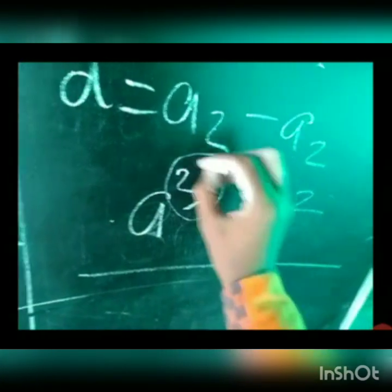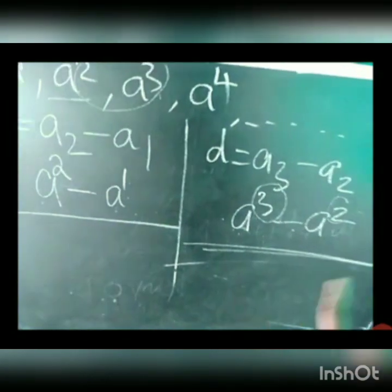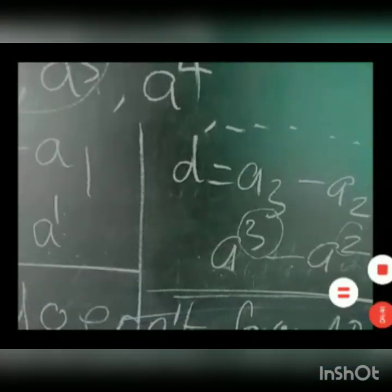Now check the second common difference: d equals a3 minus a2, which is a³ minus a². Again, the variable is the same but the powers are different (3 vs 2), so we cannot simplify and we stop. We get d = a³ minus a². Since the two common differences a² minus a and a³ minus a² are not the same, the sequence does not form an AP. Remember: only when the variables are the same AND the powers are the same can you add or subtract.